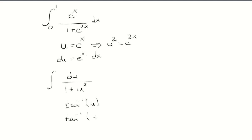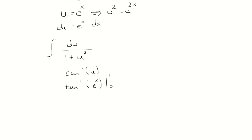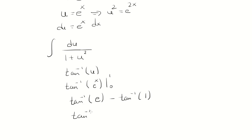I'll evaluate this from 0 to 1, giving inverse tangent of e to the 1 minus inverse tangent of 1. We don't know exactly what inverse tangent of e is, so we'll leave it alone. The inverse tangent of 1 is pi over 4, so this is the final answer.